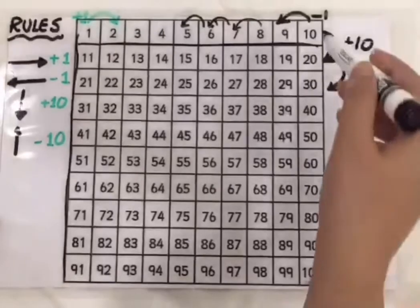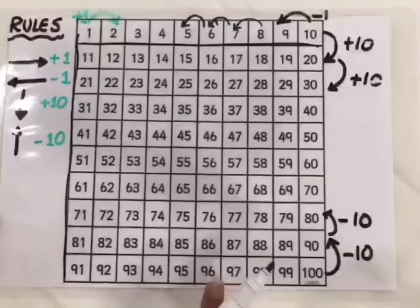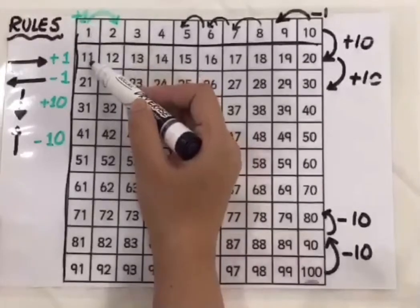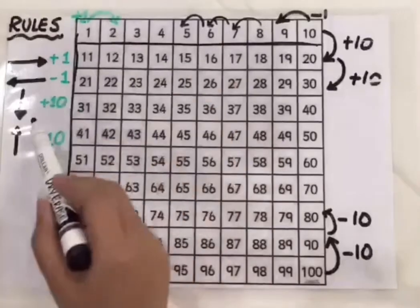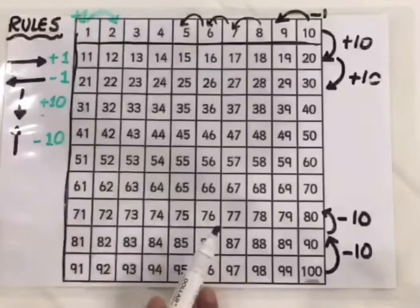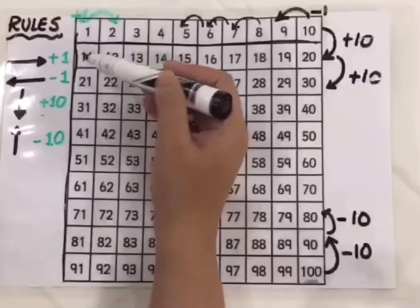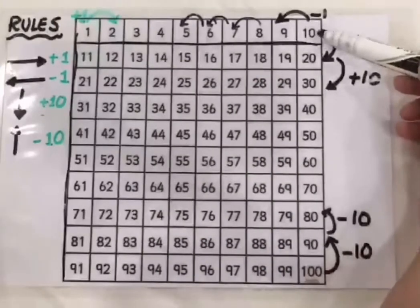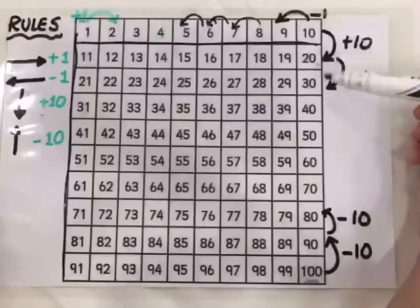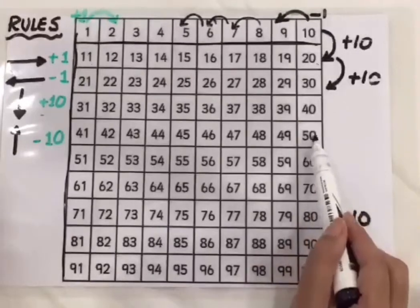Now let's discuss how numbers change when we move up and down a column. Starting from this, 1 plus 10, as I have already mentioned here, that if I am moving down, I am going to add 10. 1 plus 10 is being added in the number, 1 plus 10 is 11 or for more easy approach, you can easily see 10 plus 10 gives you 20, 20 plus 10 is 30, 30 plus 10 is 40, 40 plus 10 is 50 and so on.